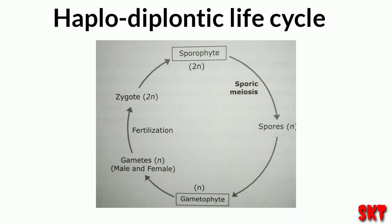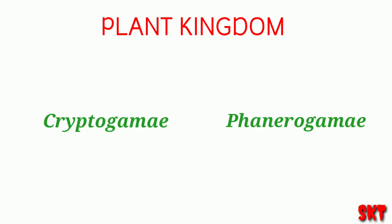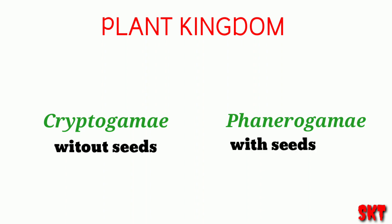And that's it about the sexual life cycle in the plant kingdom. Now let us study about the divisions in the plant kingdom. The plant kingdom is mainly divided into two divisions: cryptogamae, the plants without seeds, and phanerogamae, the plants with seeds.